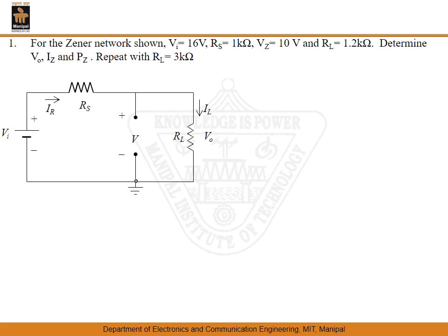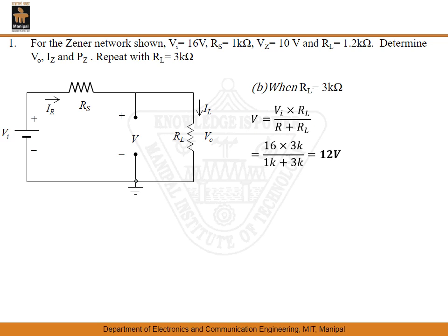Now let's find out what happens when the load resistance is changed to 3 kilo ohm. Again we open the Zener diode and determine the voltage using the formula. The substitution gives V equal to 12 volts. Since 12 volts is greater than VZ of 10 volts, this puts the Zener diode into the ON state. In the ON state, the Zener diode acts like a power supply of constant voltage of 10 volts.